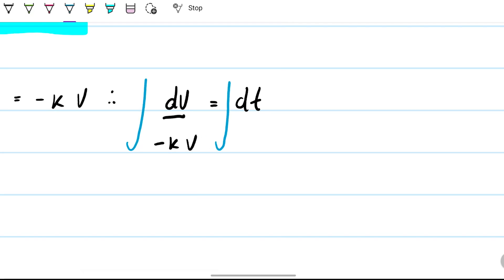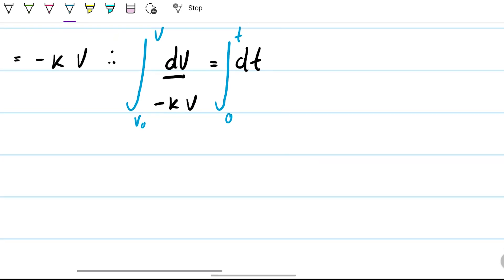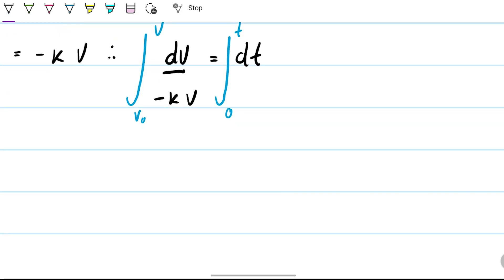I want to go specifically from 900, or v_0, all the way to velocity, and here I want to go from zero to t. This integration will be -1/k times the integral from v_0 to v of dv/v, which is natural log of v, and here I'm just going to have t.